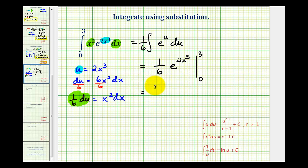So we'll have one sixth, then we'll replace x with three. So we'll have e raised to the two times three cubed power minus e to the zero.